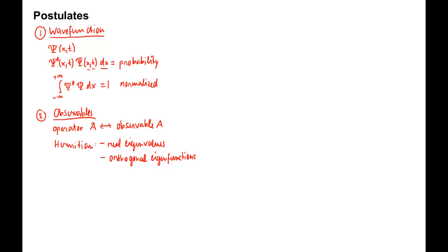The most important operator among the observable operators is the one for the total energy, the Hamiltonian. For one particle in three dimensions, it is given by h-hat equals negative h-bar squared over 2m times nabla squared plus v.